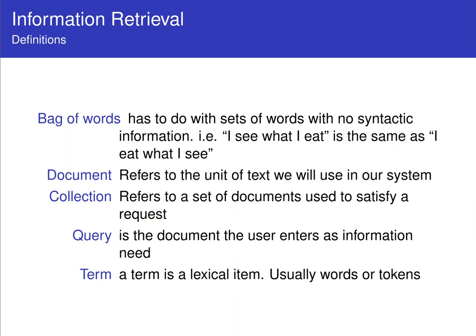The first one is the bag of words. Bag of words is when we represent documents without any syntactic information, just the words. So for example, the document, I see what I eat, will then in a bag of words where you put all these words and then scramble them, will be the same bag of words as the document, I eat what I see. Now, I see what I eat and I eat what I see are different, they have different meanings. But in a bag of words, they look exactly the same because they have the exact same words.